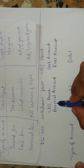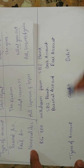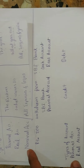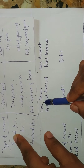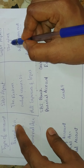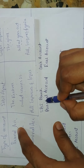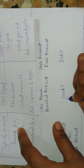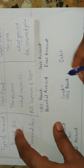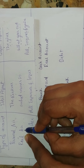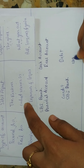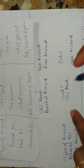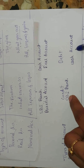Now we need to find out whether these accounts come under the credit or debit aspect. For personal account — SPI Bank: SPI Bank is the giver here because we are withdrawing amount from SPI Bank, so SPI Bank will come under the credit aspect. For real account — cash account: cash is coming into our hand, so cash account should come under the debit aspect. In this transaction, SPI Bank is credit and cash account is debit.